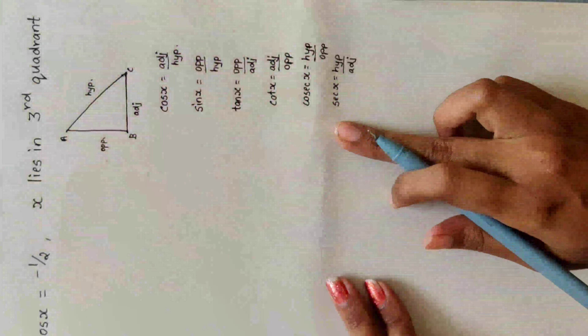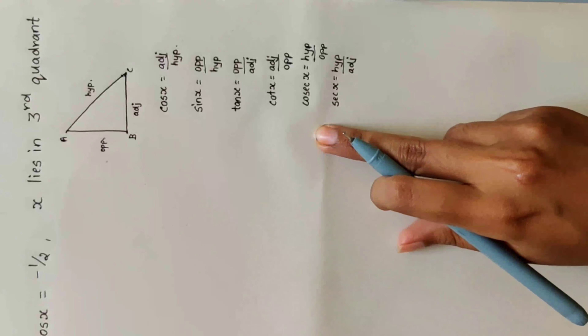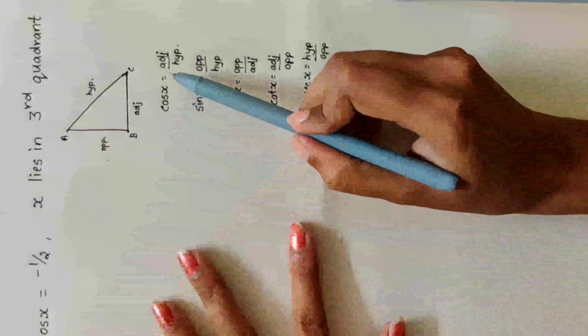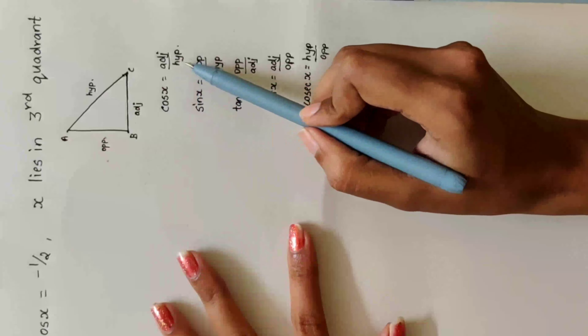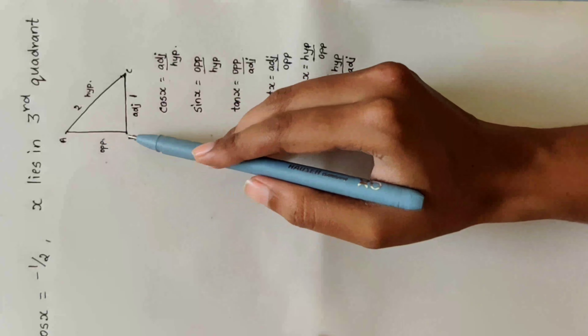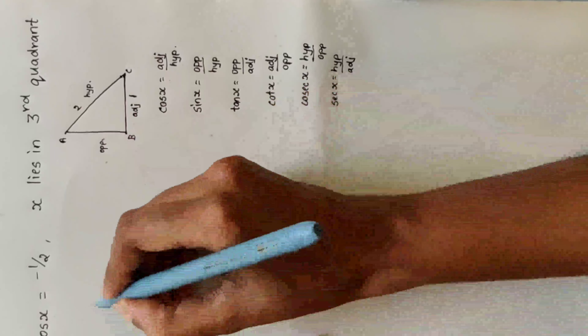This is the formula you need to know. The given value is 1 divided by 2. Whenever we solve these types of problems, note that cos x is adjacent divided by hypotenuse — so adjacent is 1 and hypotenuse is 2. By using the Pythagorean theorem, you have to find the third side.